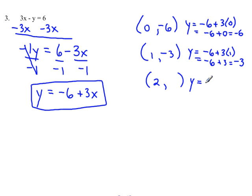Finally, let's substitute in 2. Negative 6 plus 3 times 2. Multiplication first. Negative 6 plus 6 just gives you 0. So the point 2, 0 is also a solution. Let's do one more example.